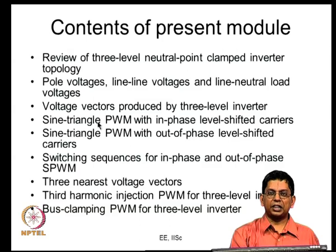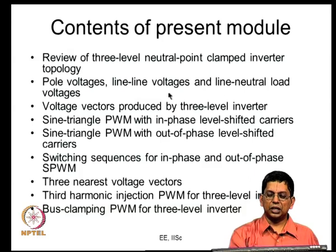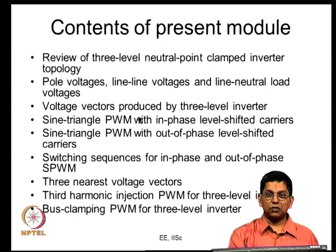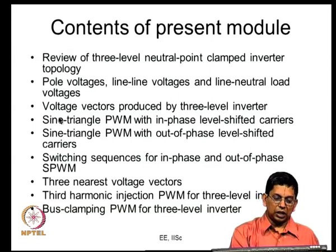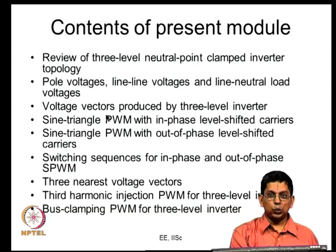Redundancy means more inverter states produce a particular voltage vector. For example, the zero vector in a two-level inverter can be produced using two different zero states. In a three-level inverter the same zero vector can be produced by three different zero states, and there are also six vectors of length 0.5 Vdc each of which can be produced by two inverter states. The redundancy in a three-level inverter is much higher, enabling many more PWM method designs.